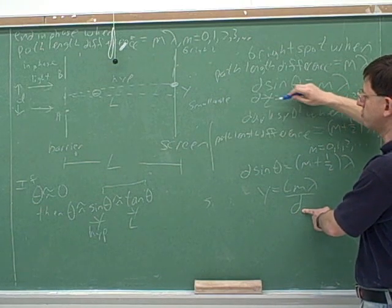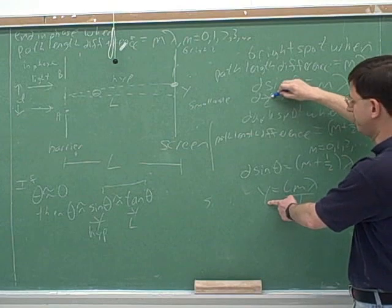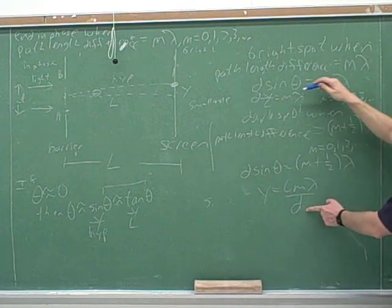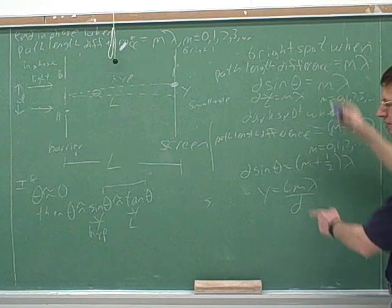Because usually one of the things we're especially interested in is the position of the spot. So if we solve this for the position of the spot, we would get this. Do that right? L over D times M lambda.